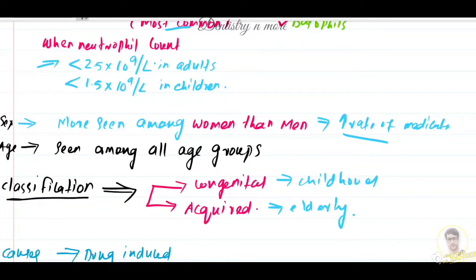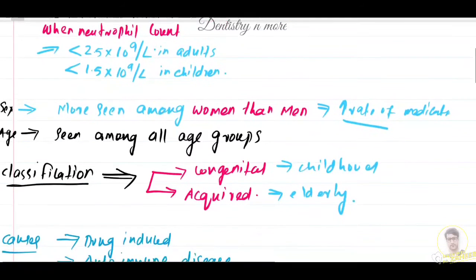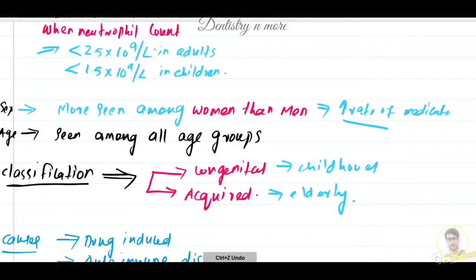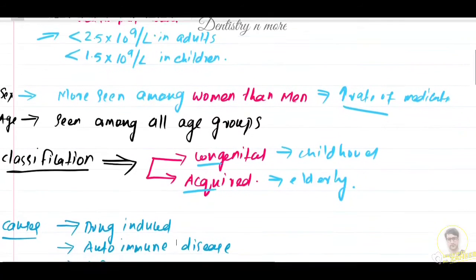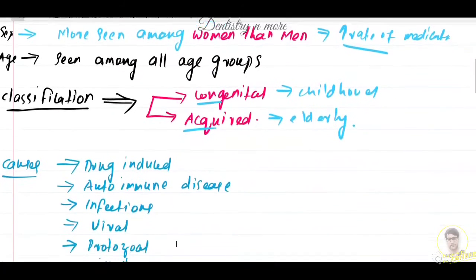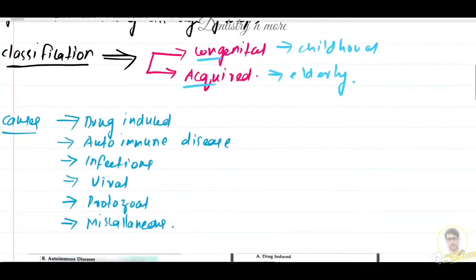The classification: it can be congenital, meaning a person is born with the condition, or a person can acquire it from certain drugs or medical procedures. So basically we have two types — congenital and acquired. The causes of neutropenia or agranulocytosis include most commonly drug-induced causes, autoimmune diseases, infections (viral, protozoal), and miscellaneous problems.